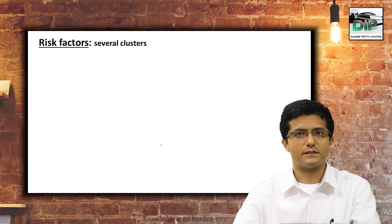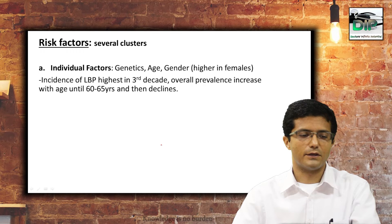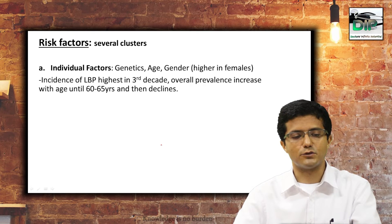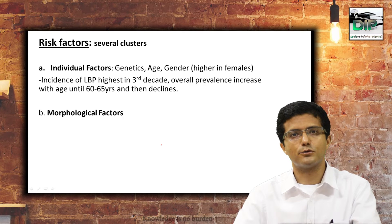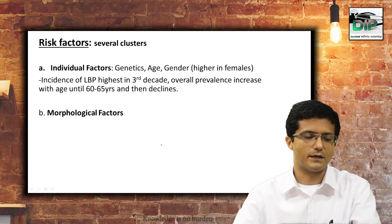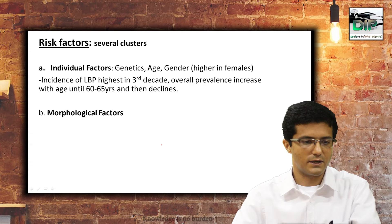To classify the risk factors of low back pain, we categorize them into different clusters. First, individual factors: genetic factors play a role; incidence is highest in the third decade of life and overall prevalence increases with age until 60 to 65 years, then declines. It is more common in females. Morphological factors such as spina bifida or pars defects like spondylolysis were also considered important risk factors, though newer literature shows they have relatively less significance.